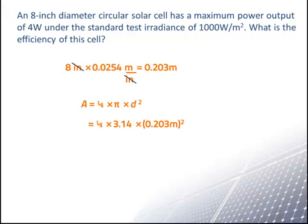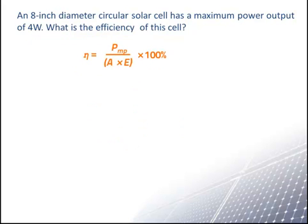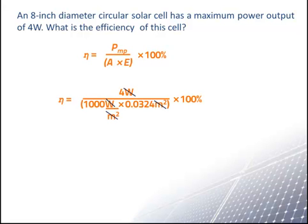Plugging in the numbers, we find that the area is 0.0324 square meter. Returning to our formula, we plug in the numbers and find an efficiency of 12.3%.